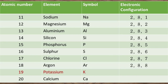For potassium with atomic number 19, although M shell can accommodate maximum 18 electrons, we cannot write its electronic configuration as 2, 8, 9, because it is discussed earlier that the outermost shell can accommodate maximum 8 electrons. If we write it as 2, 8, 9, the outermost shell would have more than 8 electrons, which would be wrong. So the electronic configuration of potassium is written as 2, 8, 8, 1. Similarly, the electronic configuration of calcium is written as 2, 8, 8, 2.